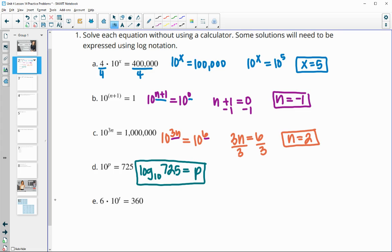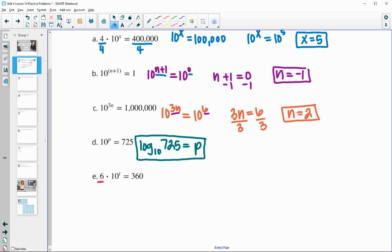And then e, we can divide by 6 to both sides to isolate the variable. So 10 to the t equals 60. 60 can't be written as a base 10 again, so we're going to have to do a logarithm. Log base 10 of 60 would equal t.